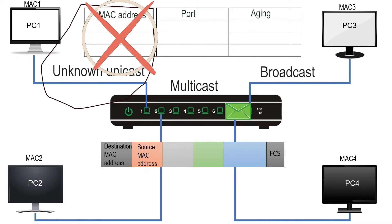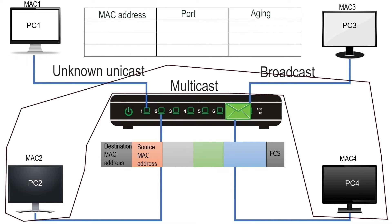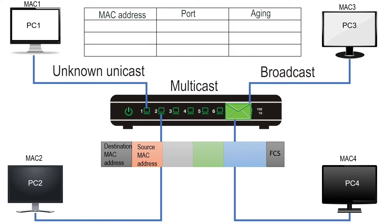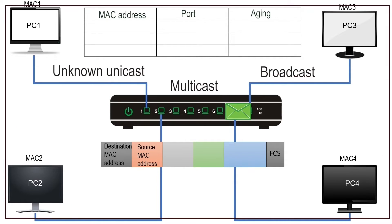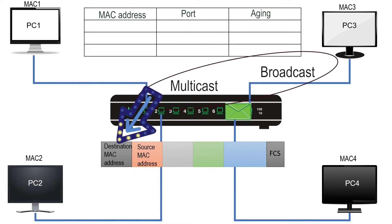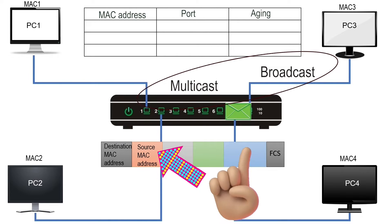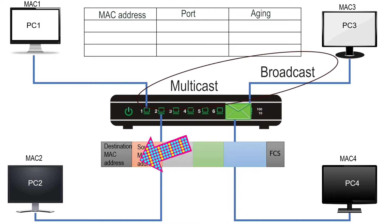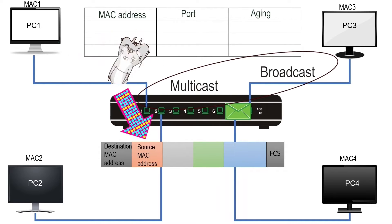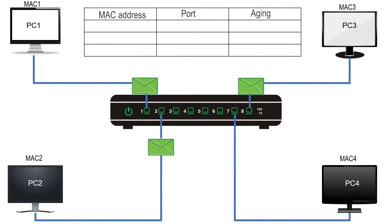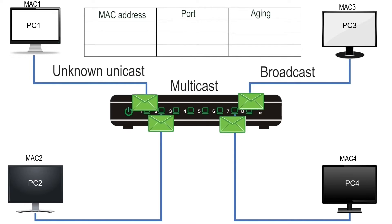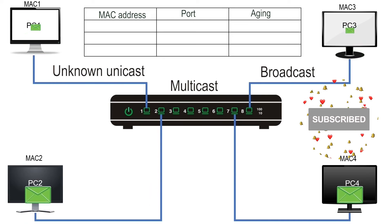An unknown unicast address is an address not available in the CAM table. A multicast address belongs to a group of devices. A broadcast address belongs to all devices on the local network. Multicast and broadcast are destination-only addresses — they are never used in the source address field of a frame. Since a switch learns addresses from the source field, it never learns these addresses. They always remain unknown to the switch, so a frame with an unknown unicast, multicast, or broadcast destination is always flooded.